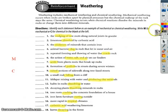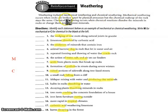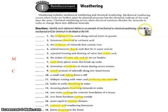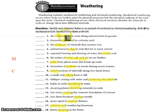Weathering includes mechanical weathering and chemical weathering. Mechanical weathering is when rock breaks or cracks by a physical process but doesn't change chemically, whereas chemical weathering involves a chemical process where minerals are dissolved and something new is formed. We're going to put an M for mechanical weathering and a C for chemical, looking for things that indicate cracking versus chemical change.